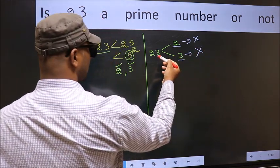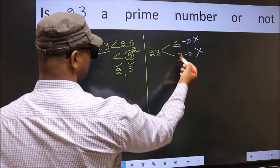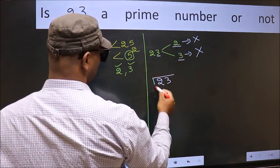So 23 is not divisible by any of these numbers. So 23 is a prime number.